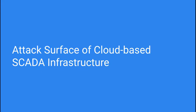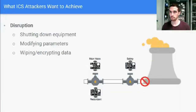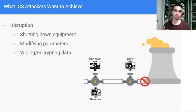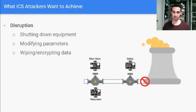Let's take a look at how the attack surfaces change after moving to the cloud. First we need to understand what attackers are trying to achieve — in the ICS world, attackers are either trying to gain money or cause damage. Attackers reaching an OT network can start by shutting down equipment and randomly stopping PLCs, which is effective but very noisy. More complex attackers will try to modify parameters, which requires more knowledge about the operation. We also see attackers wiping or encrypting data, mostly for money, as seen in the latest ransomware attacks.